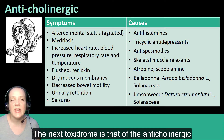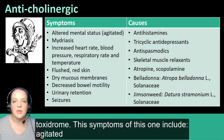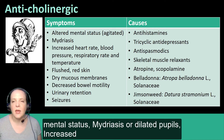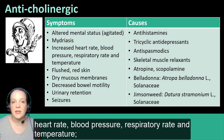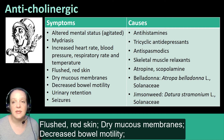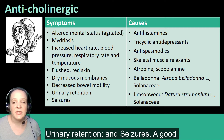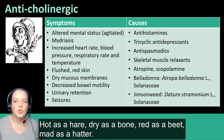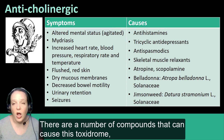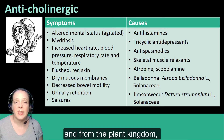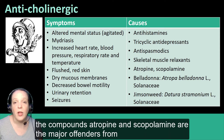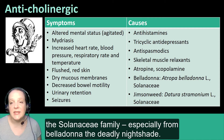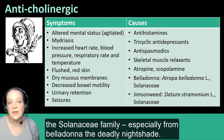The next toxidrome is the anticholinergic toxidrome. The symptoms include agitated mental status; mydriasis or dilated pupils; increased heart rate, blood pressure, respiratory rate, and temperature; flushed red skin; dry mucous membranes; decreased bowel motility; urinary retention; and seizures. A good way to remember this constellation of symptoms is the phrase: hot as a hare, dry as a bone, red as a beet, mad as a hatter. Compounds causing this toxidrome also come from the plant kingdom, including atropine and scopolamine — the major offenders from the Solanaceae family, especially from belladonna, the deadly nightshade.